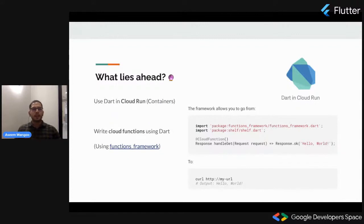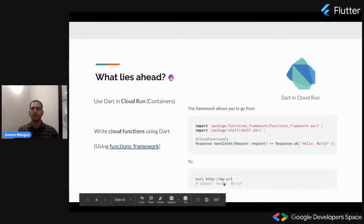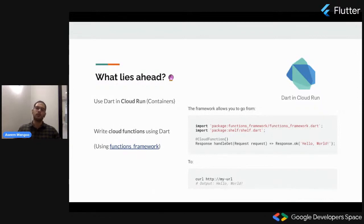What lies ahead? We can use DART in Cloud Run — you can containerize applications using DART and deploy on Google Cloud Run. You can also write Cloud Functions using DART now, available using the Functions Framework package on pub.dev. On the right-hand side you can see how to use DART to create a Cloud Function: the Functions Framework is imported, and if a request is sent you respond with hello world.